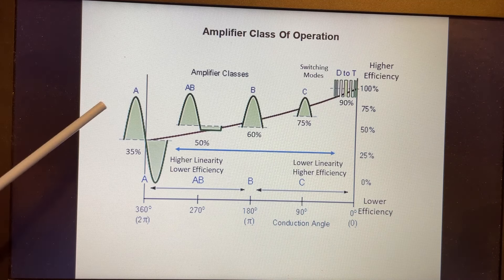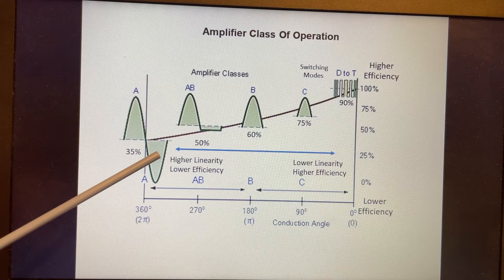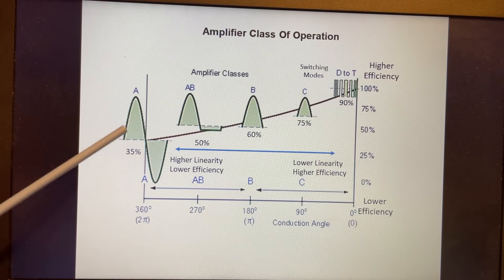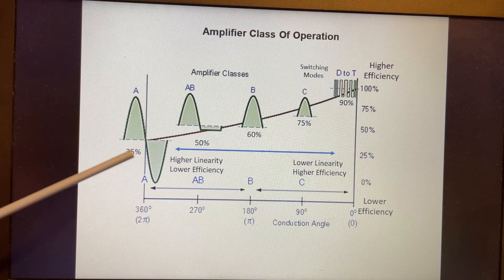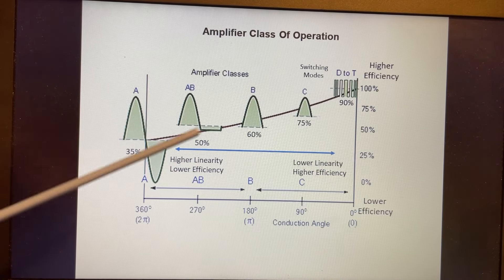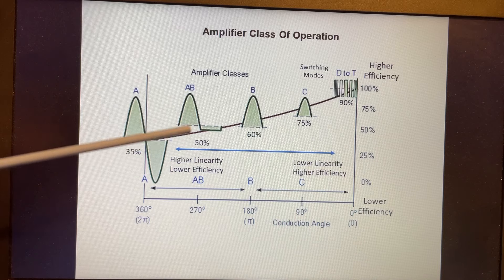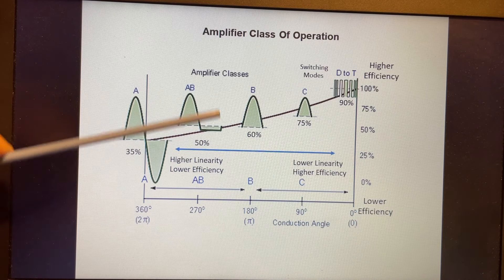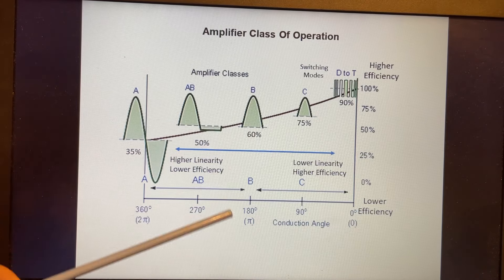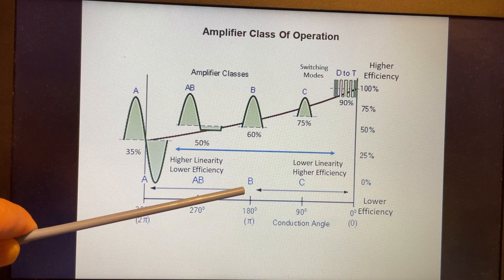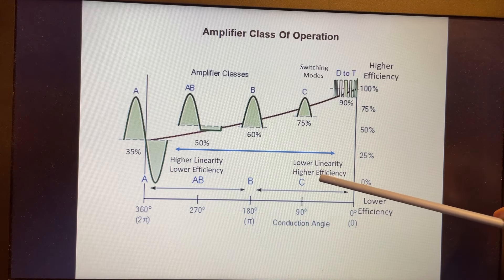This chart shows that a class A amplifier at 360-degree conduction angle has much higher linearity because it is conducting the full 360 degrees, but much less efficiency — around 35% typically. As we move from class A to AB, conducting about 270 to 360 degrees, we have lower linearity but higher efficiency. Class B at 180-degree conduction angle has higher efficiency and lower linearity. Class C has even lower linearity and higher efficiency.